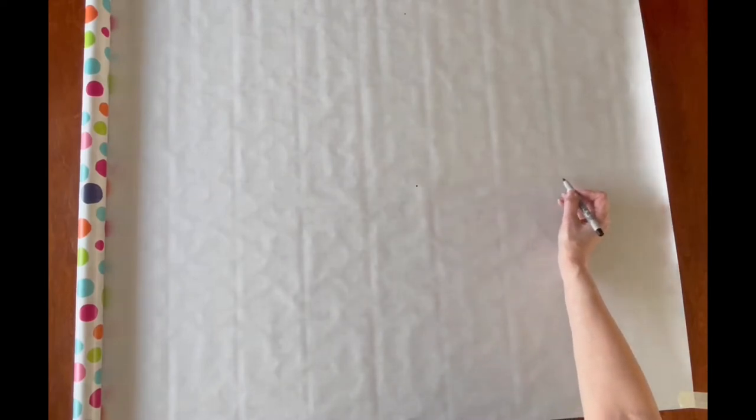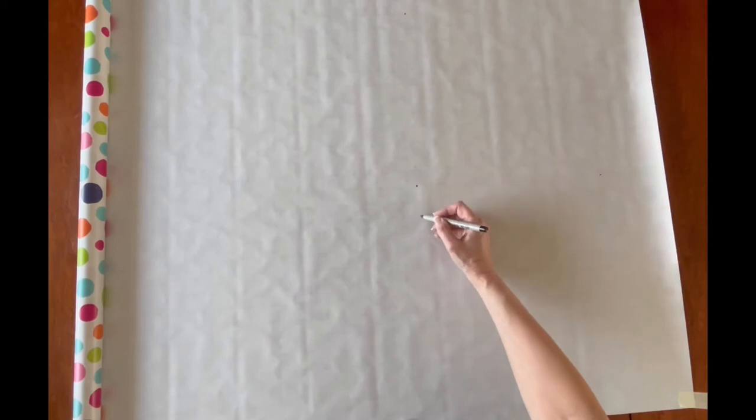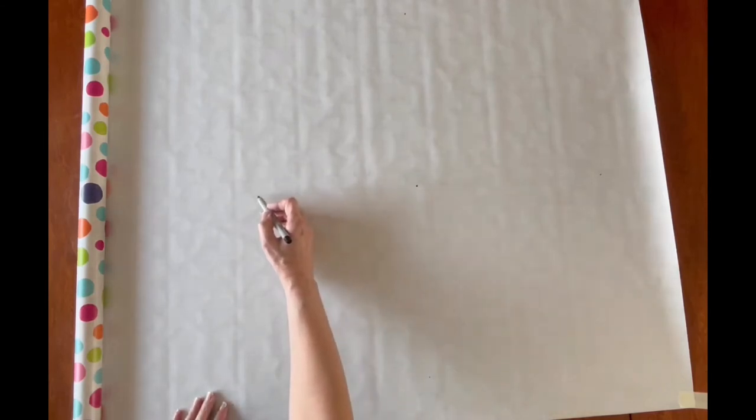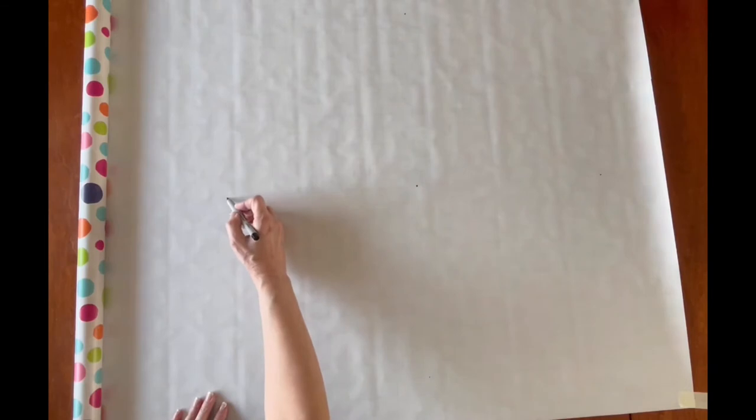Count twelve squares to the right, make a mark. Twelve squares down, make a mark. The same for the left and up above. This will be the twelve, three, six, and nine positions on your clock.